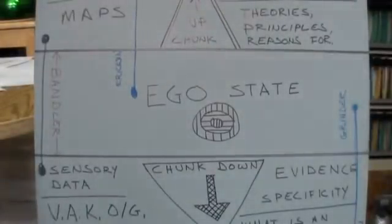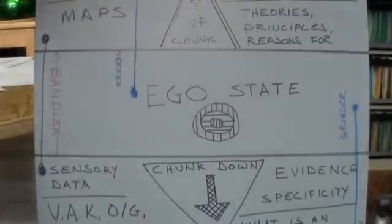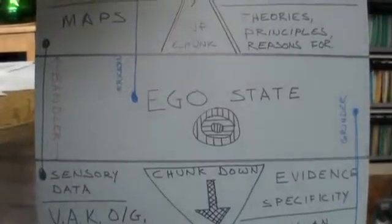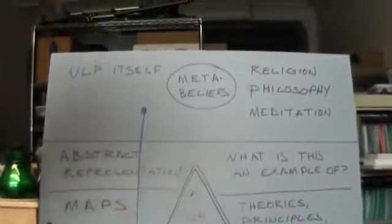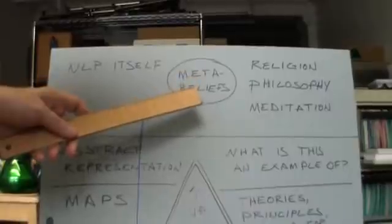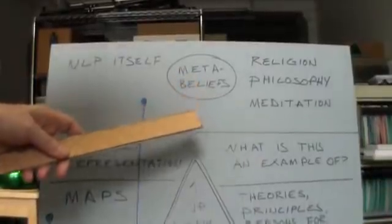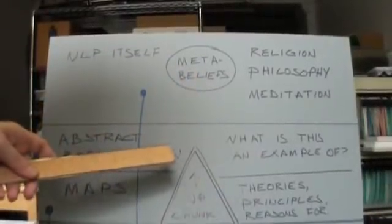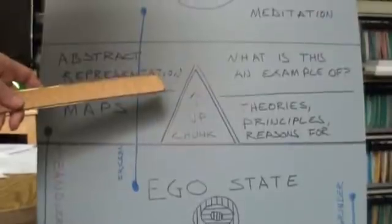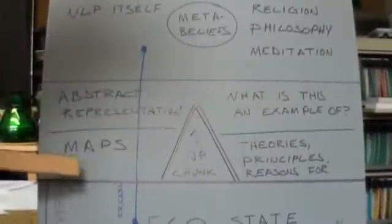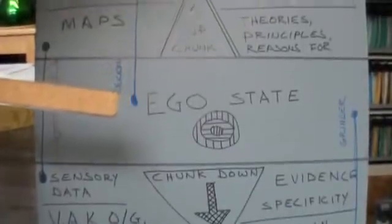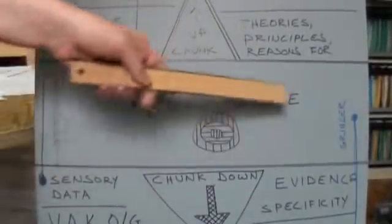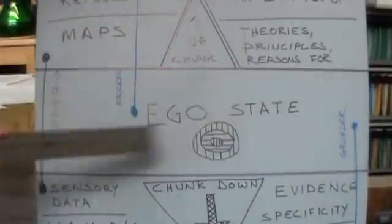Here is our five-stage map. I'll give it a quick sweep so you can see from the top, where we have the uppermost level meta-beliefs. This is the zone of chunking up. This is what we would call the ego state — the resting state, the default state of the mind.